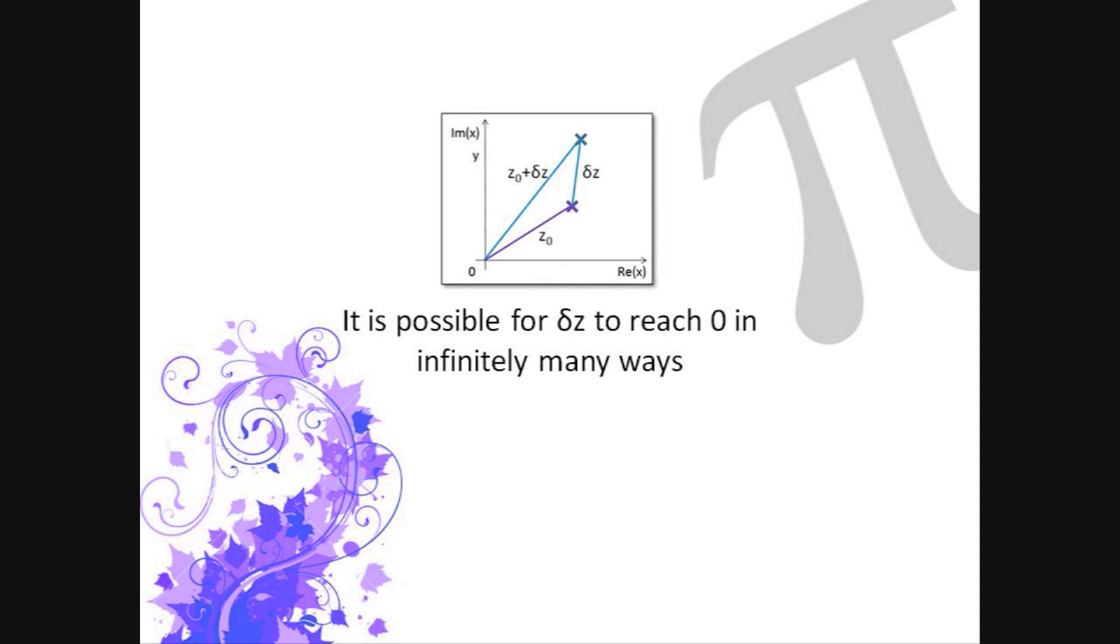We now have a slight problem. Delta z is a complex number, so it includes both a change in x, delta x, and a change in y, delta y. Therefore, it is possible for delta z to reach zero in infinitely many ways, as it is possible to approach f of z0 for infinitely many directions. The diagram shows how the addition of delta z to z0 causes there to be a change in both x and y, both parts of the complex number. This is unlike differentiation with a normal number, where the y-axis is a function of the x values, and is not a separate part of the number as with a complex function.